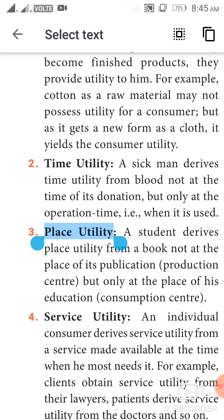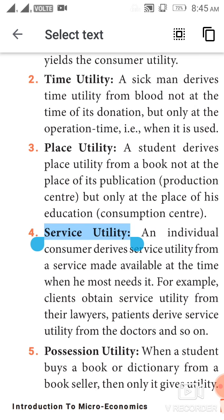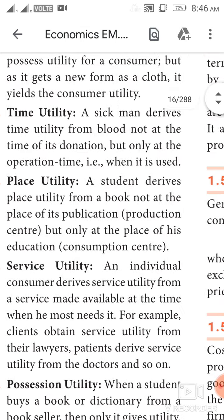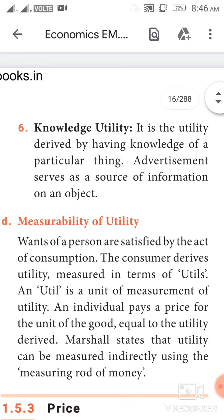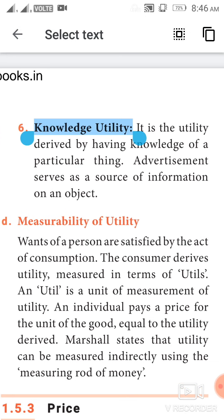Service utility: an individual consumer derives service utility from a service made available at the time when he most needs it. For example, clients obtain service utility from their lawyers, patients derive service utility from doctors, and so on. Possession utility: when a student buys a book or a dictionary from a bookseller, then only it gives utility. It is a utility derived by having knowledge of a particular thing. Advertisement serves as a source of information on an object.